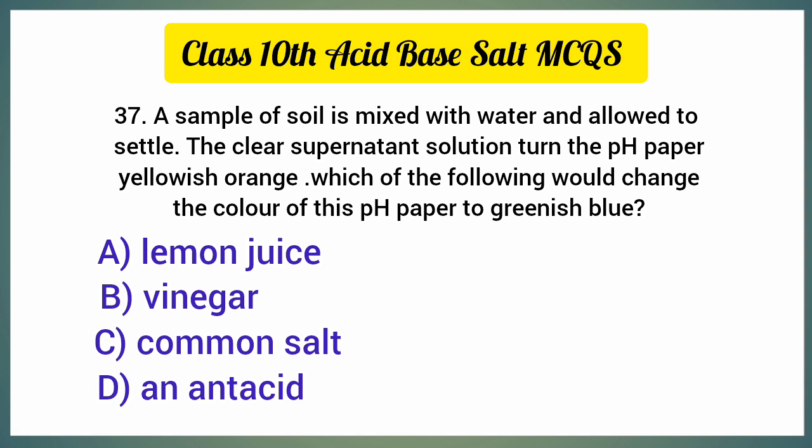A sample of soil is mixed with water and allowed to settle; the clear supernatant solution turns the pH paper yellowish orange. Which of the following would change the color of this pH paper to greenish blue? The correct option is option D, an antacid.